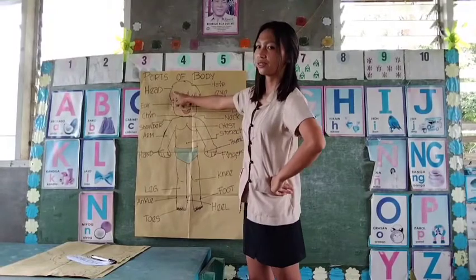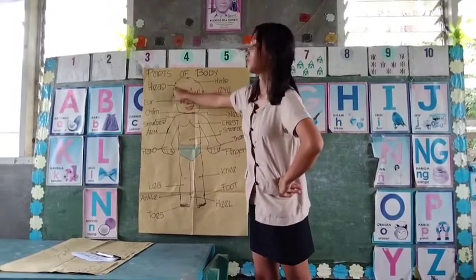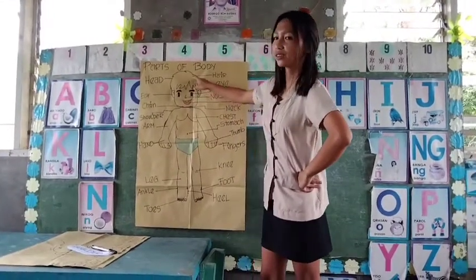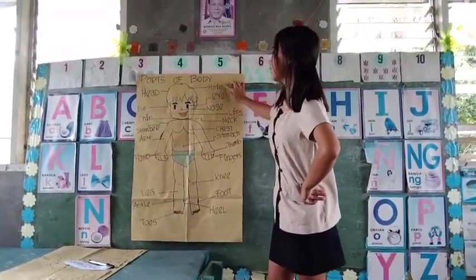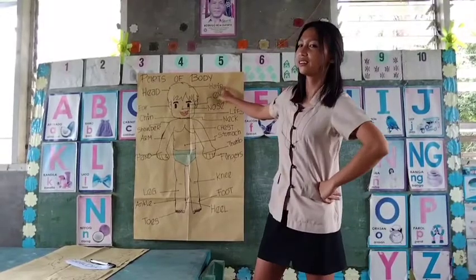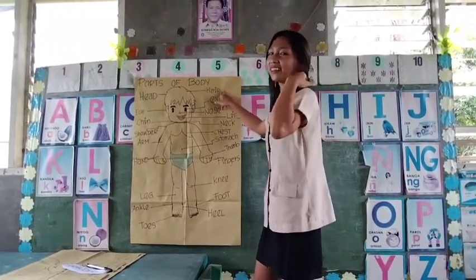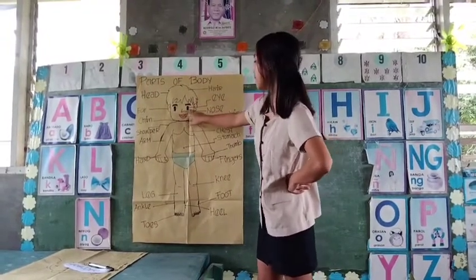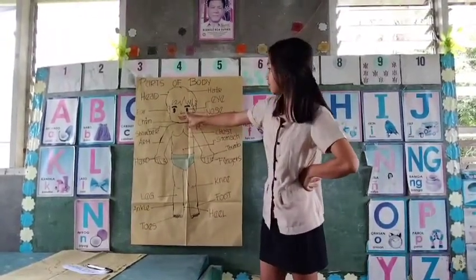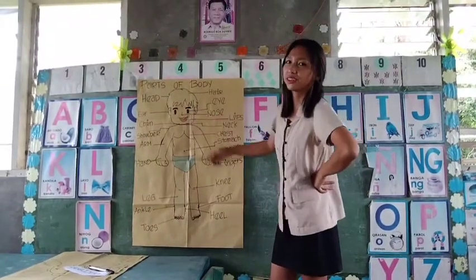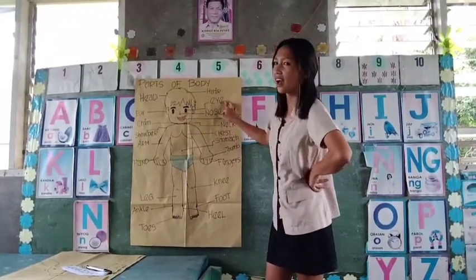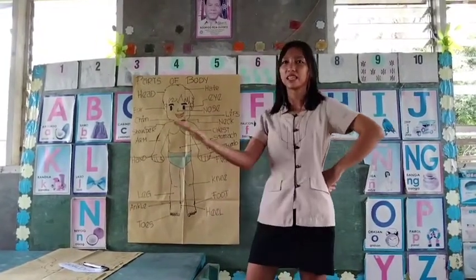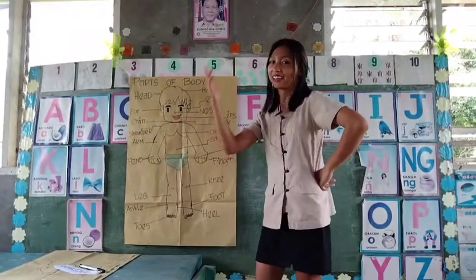Ano yung itinuturo ngayon? Ito ay ang ating head. Ito naman, anong tawag dito? Ito ay ating hair. And ito naman, anong part ng ating katawan nito? Ito ay ating eyes. Napaka-importante ito para makita natin yung paligid natin at syempre yung crush natin.